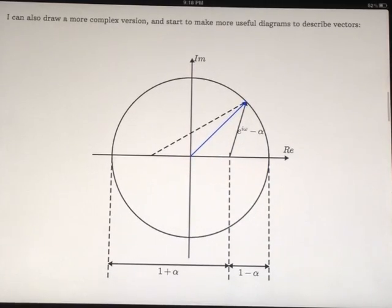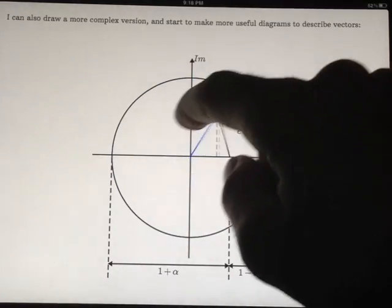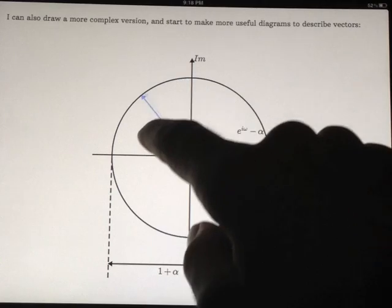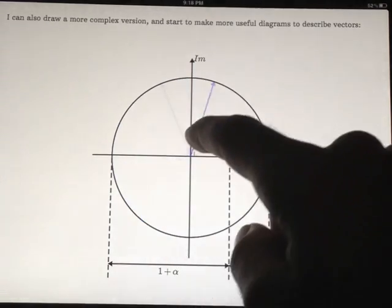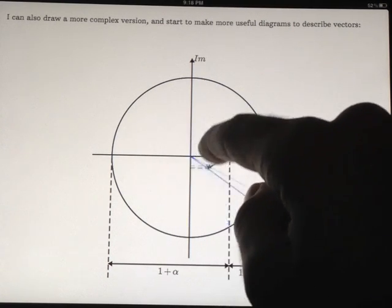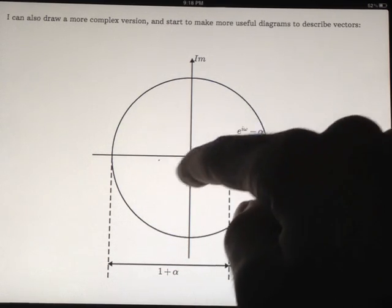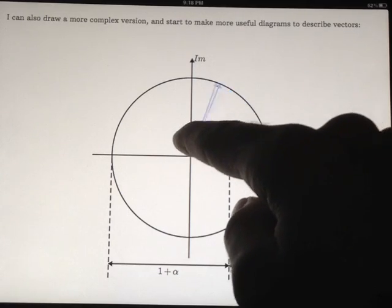You can also do something more useful. Here's an example of a unit circle. And I'm taking the trigonometric components of a vector e to the i omega minus alpha. And you can see I also have a unit vector that's staying within the unit circle. So you can teach basic trigonometry. You can also get into more complex and real components.